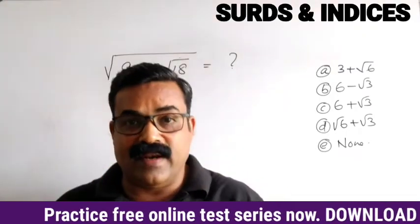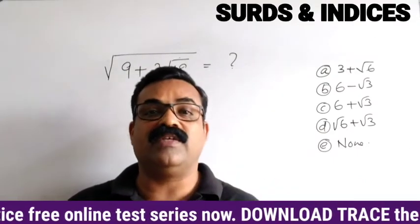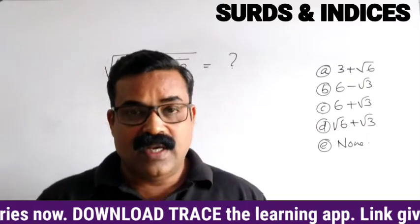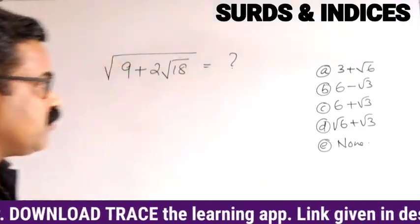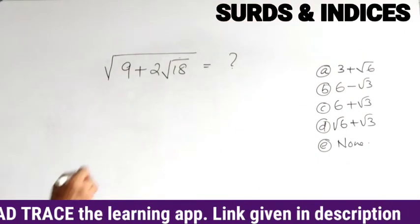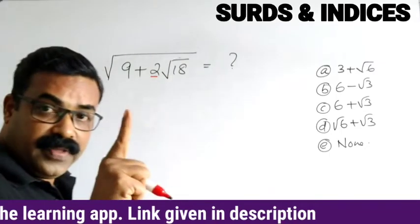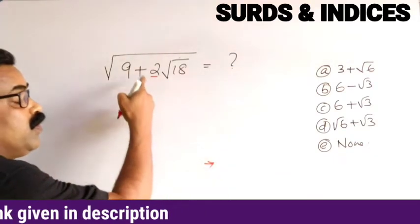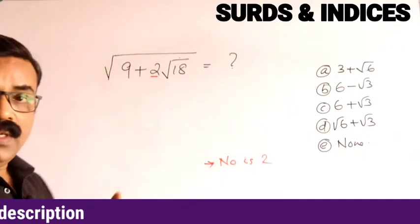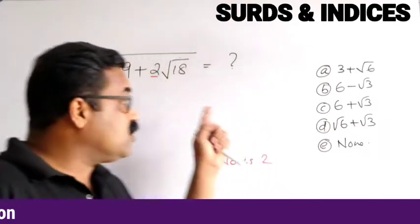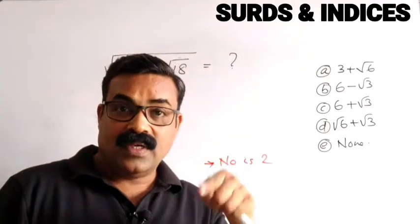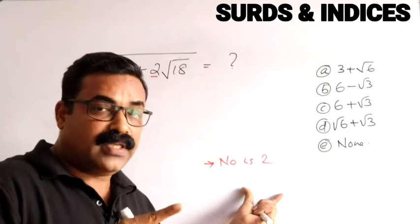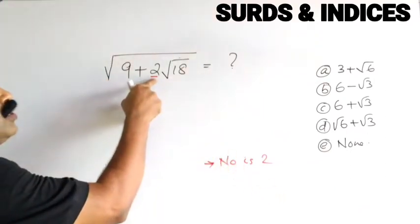Understand this very clearly — once I explain this, this type of question will be very easy for you. There is a shortcut method. Step one: make sure that the coefficient of the inner square root is 2. In this question the number is already 2. If it is not 2, you must make it 2 before applying the shortcut.